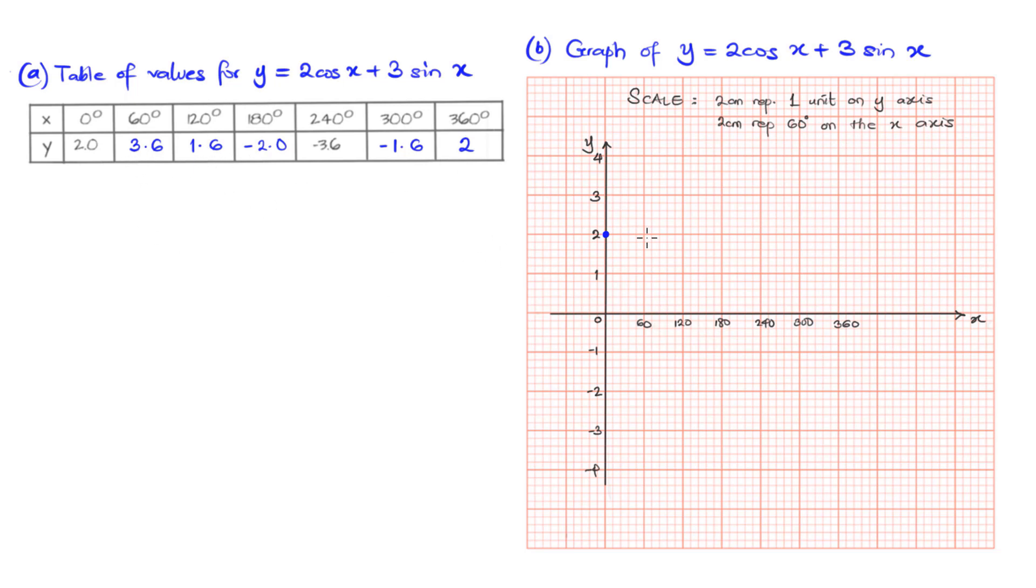When x is 60 degrees, y is 3.6. For us to have 2 to 3 in these divisions, and there are only 5 boxes, that means each of the boxes is going to take 0.2 units. So 2, 2.2, and so on. So 3.6 is going to be here. We have 60 degrees and 3.6. Their point of intersection is going to take our second entry.